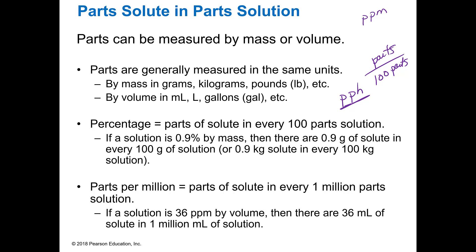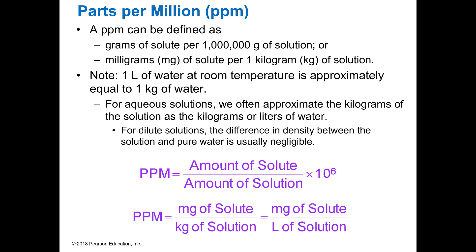Parts per million is parts per a million parts total. So if you have 36 parts per million, you have 36 milliliters of solute in a million milliliters of solution — all added together. And it's a very easy conversion. Parts per million is the amount of solute per amount of solution times a million. A lot of times you see milligrams per kilogram — that's parts per million — or milligrams per liter, which is also parts per million.